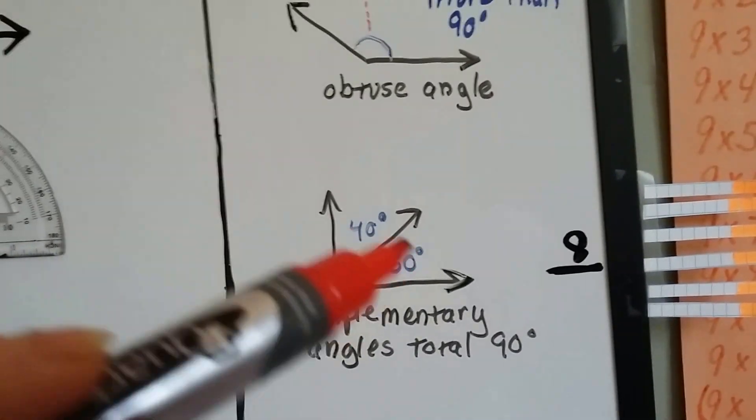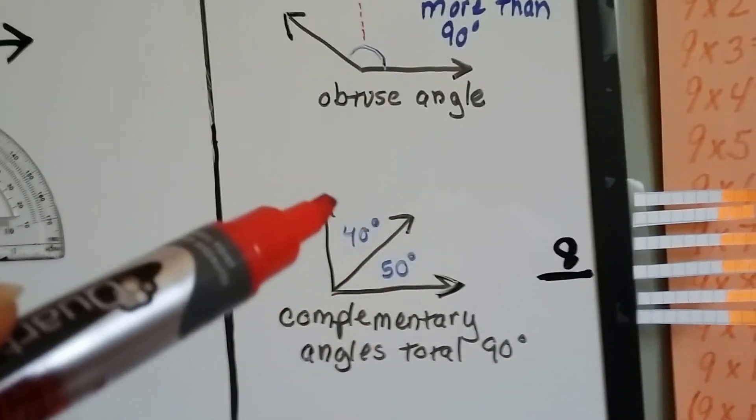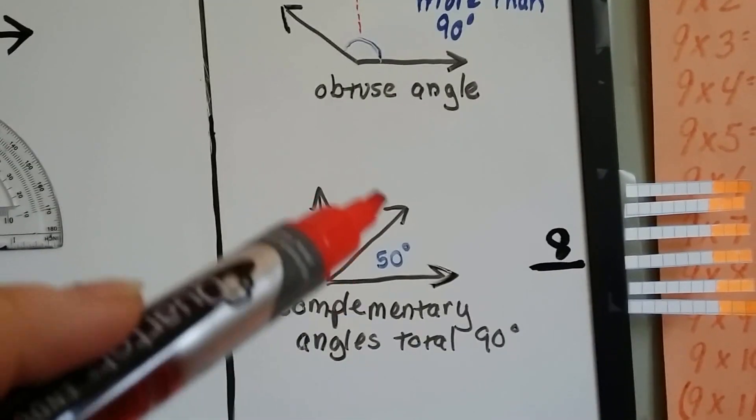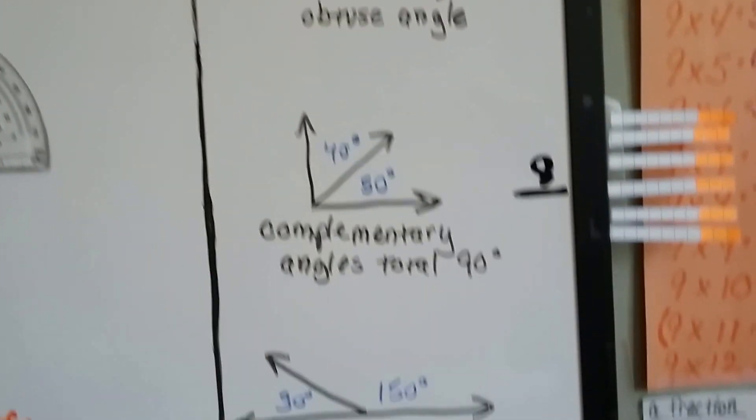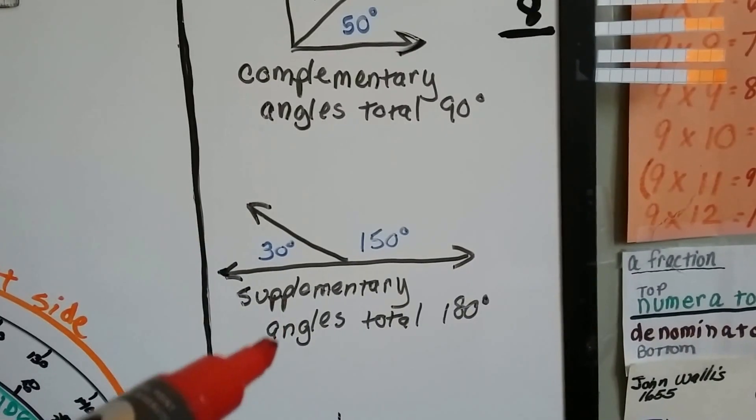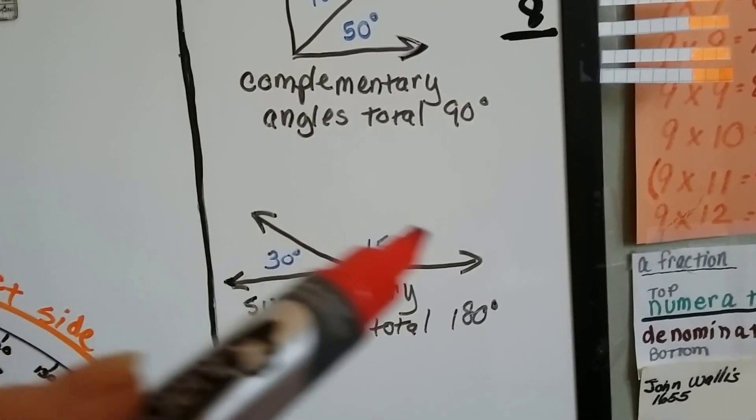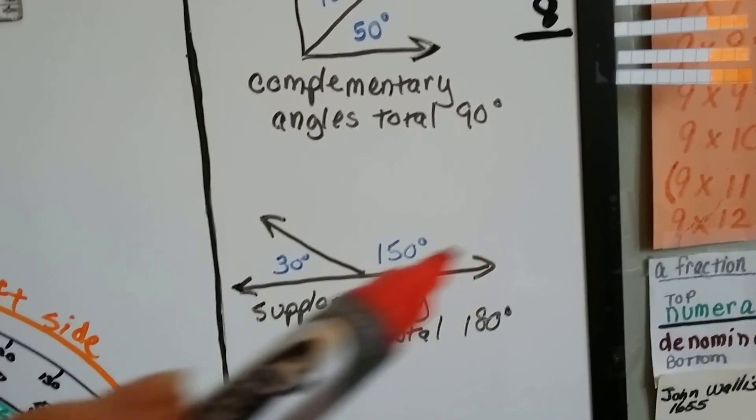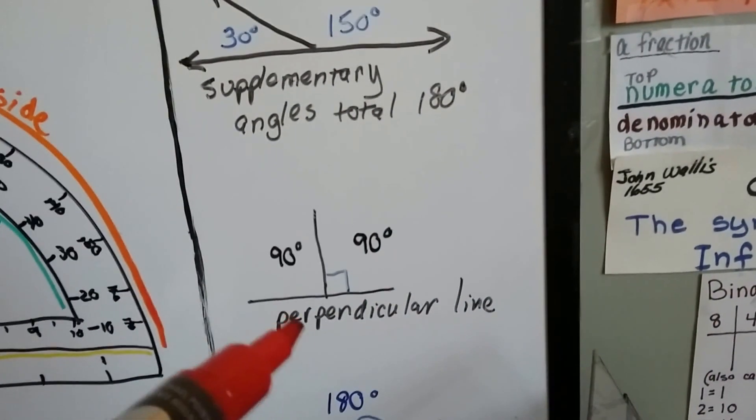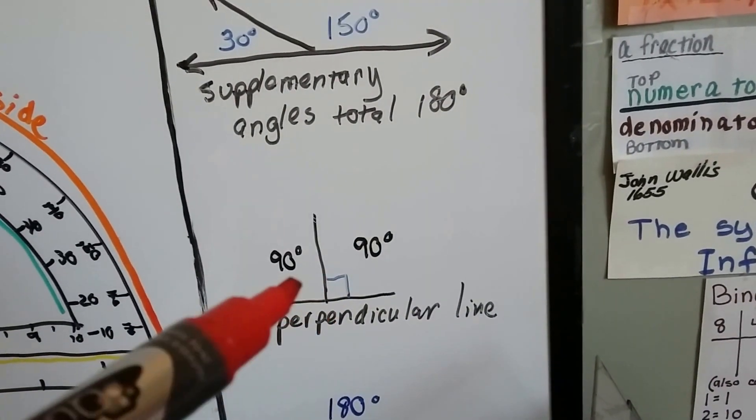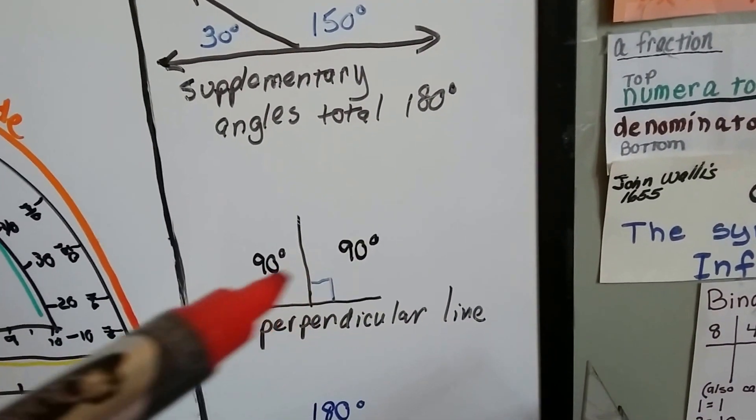Complementary angles are two angles that total 90 degrees. See? A 40 and a 50 make a 90 degree. A supplementary angle is some angles that total the 180, the half circle. Perpendicular line makes two right angles. See?